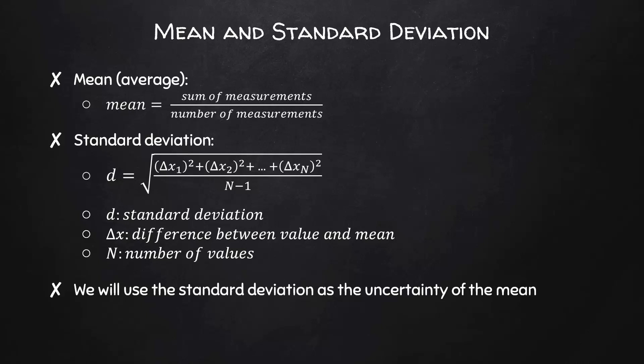When we use the mean value of a set of measurements in a calculation, we'll use the standard deviation as the uncertainty of the mean. When dealing with sample sizes of 4 or less, standard deviation isn't very useful. In that case, we'll use half the range as the uncertainty.